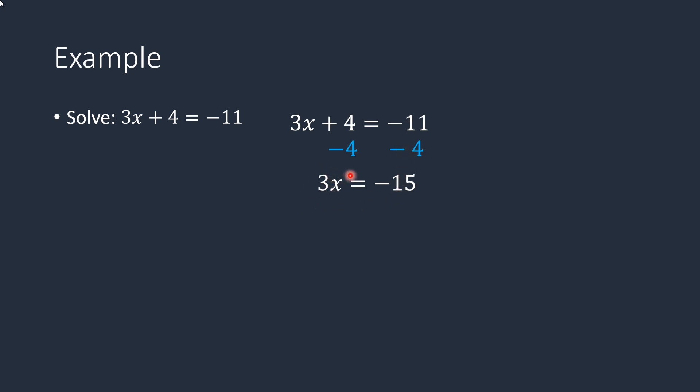Then we want to divide that 3 from both sides. We want to get rid of that because it's 3 times x. We want to do the opposite. So we divide both sides by 3. The 3s cancel. That's 1x, and 1 times x is x. Negative 15 over 3 is negative 5.